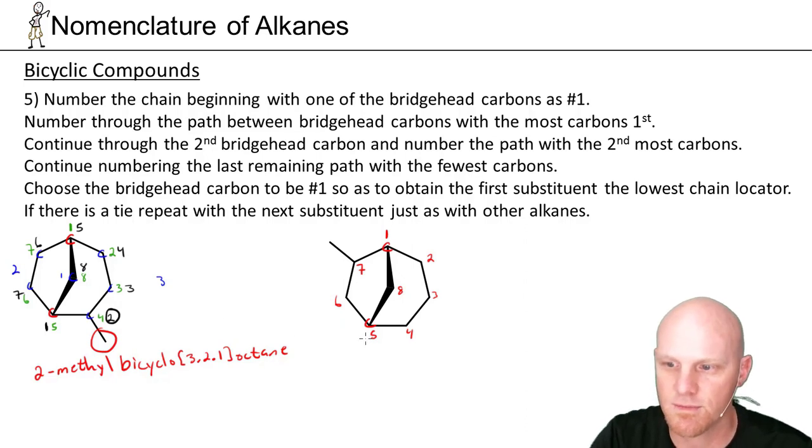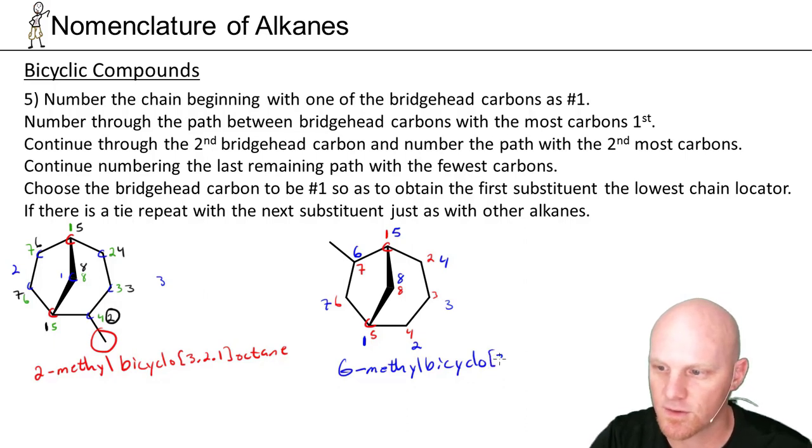But if we start with the other bridgehead carbon as number one here, number through the biggest chain would be two, three, four, five, and then six. And we see that's going to be a shorter pathway and a smaller number for my substituent. So this is going to be 6-methyl, not 7-methyl. Let's write that out. So 6-methyl-bicyclo[3.2.1]octane.